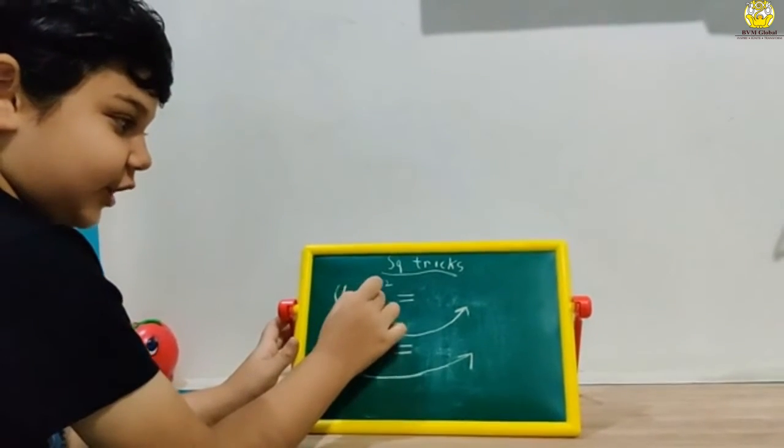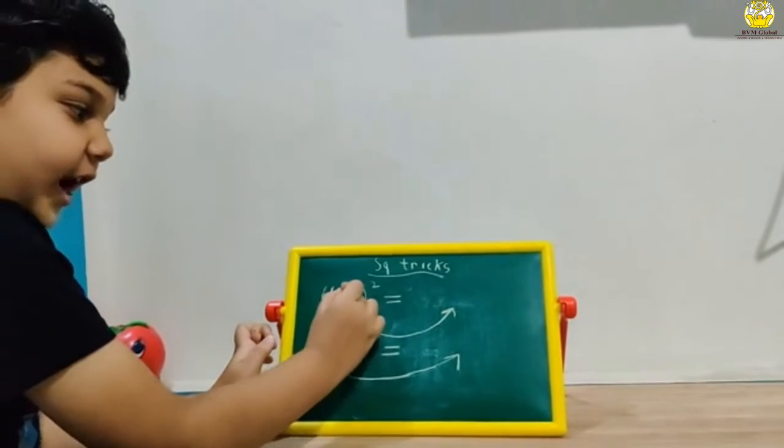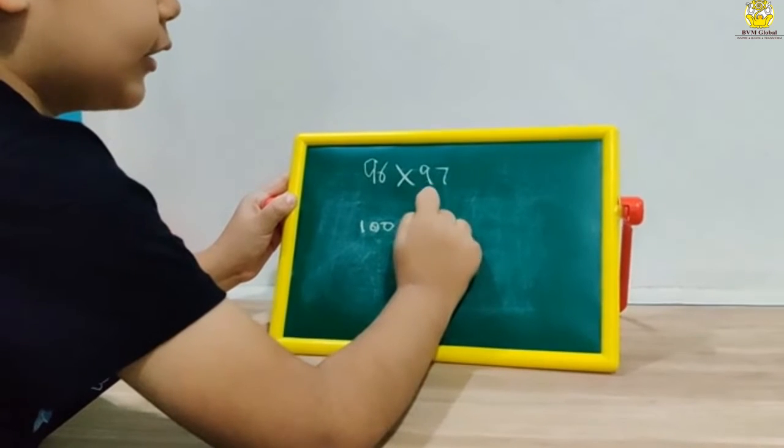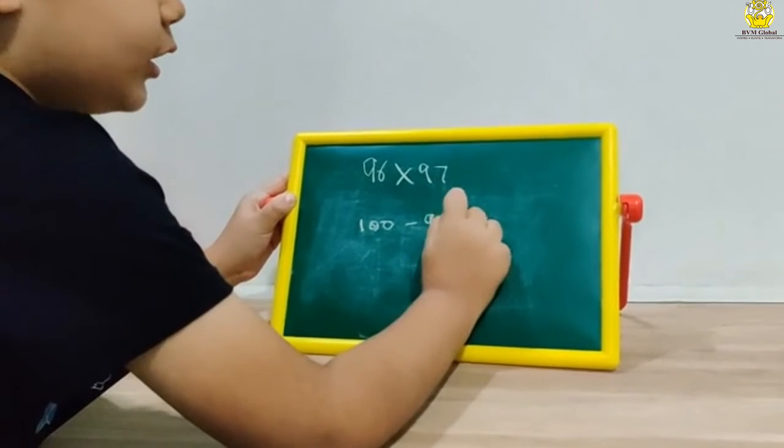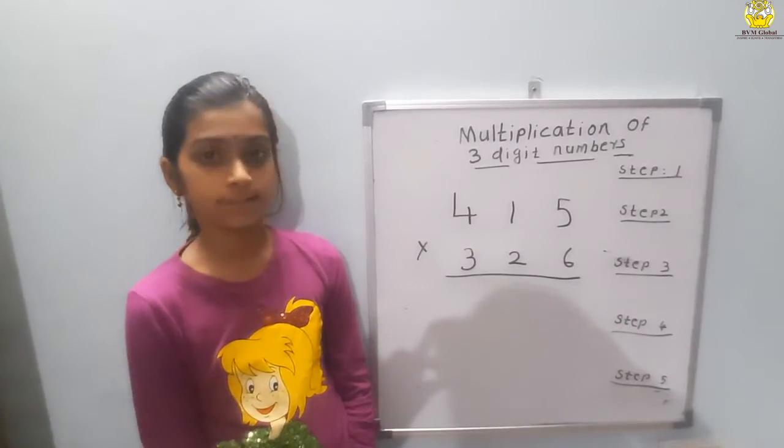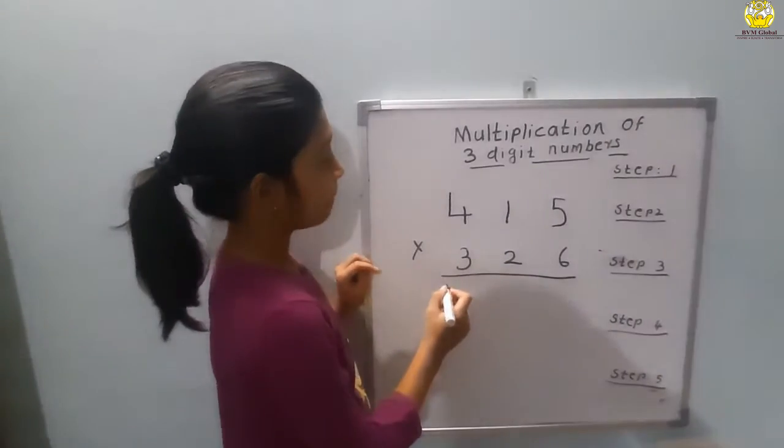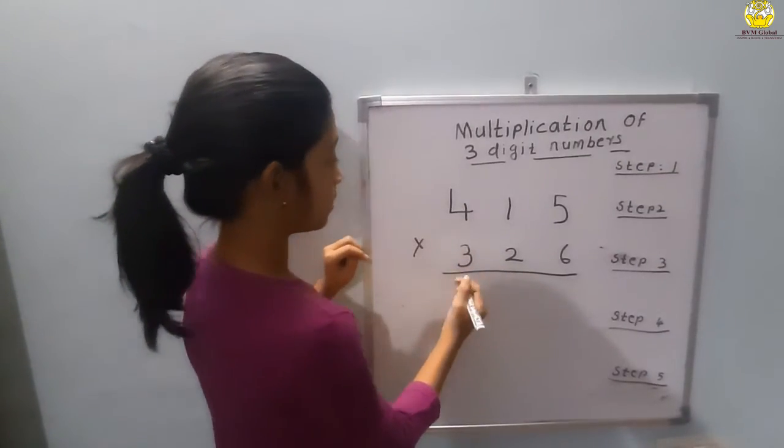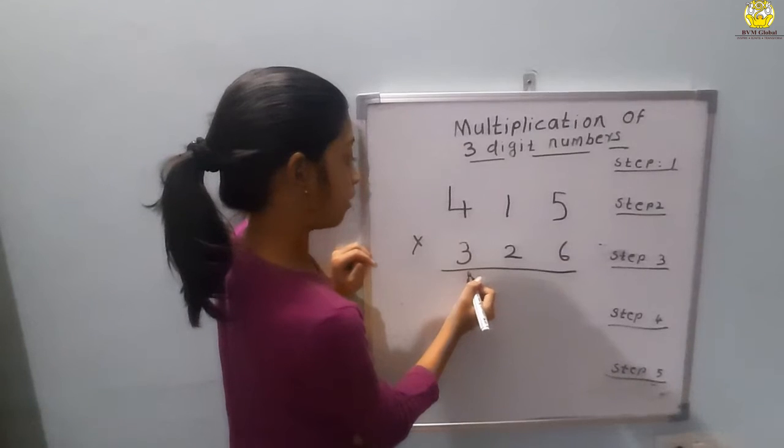Our first problem is 45 square. So 5 into 5 is 25. Minus 96 equal to 4 and 100. Let's get an example. So the example is 415 into 326. So first, let's divide into 5 columns.